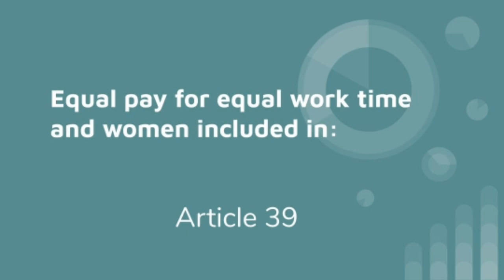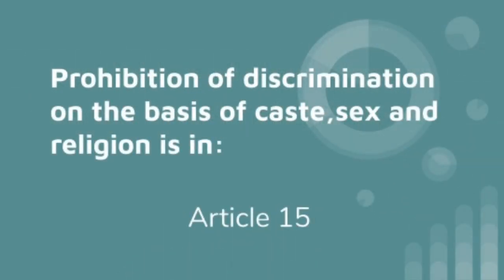Equal pay for equal work for both men and women is included in Article 39. Article 39 deals with equal pay for equal work for both men and women. Prohibition of discrimination on the basis of caste, sex, and religion is in Article 15.